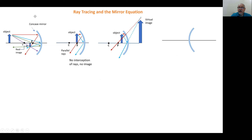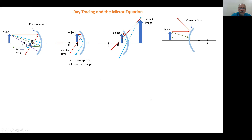Now let's go for the case of a convex mirror. We have the focal point and center of curvature. The rays are reflected and appear to come from the focal point. Tracing the reflected rays backward, they look to meet at a position behind the mirror — that is the image position. The image is upright and located behind the mirror, so the image is virtual.